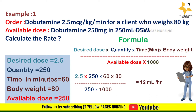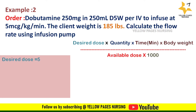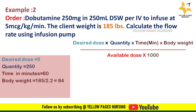Example 2: Order is dobutamine 250 mg in 250 ml D5 water IV to infuse at 5 microgram per kg per minute. The client weight is 185 lbs. Calculate the flow rate using an infusion pump. Here the desired dose is 5, quantity is 250, time in minutes is 60, body weight is 185 lbs — we need to convert to kilogram. 185 divided by 2.2 gives 84 kilogram.